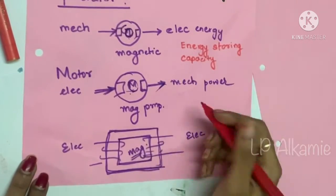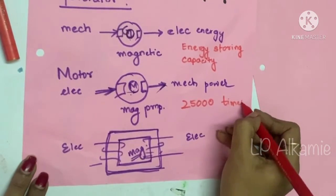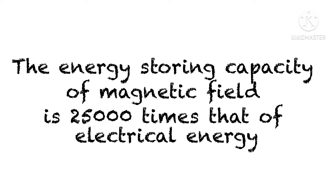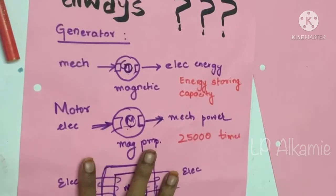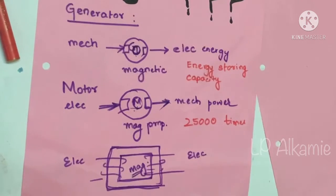This energy storing capacity is 25,000 times that of electrical field. Due to this special property of the magnetic field, we always choose this magnetic field as the medium of conversion, whether it is a motor or a generator or a transformer. Whatever it is, we go for the magnetic field as the medium.